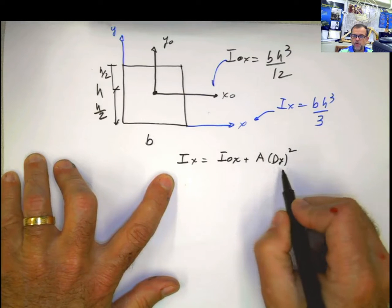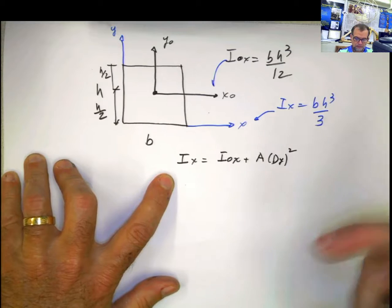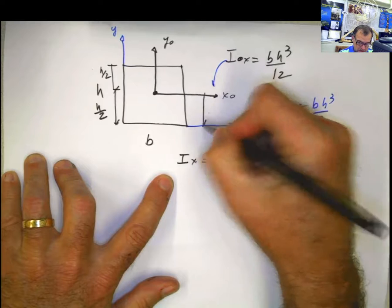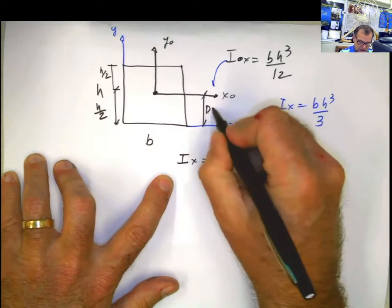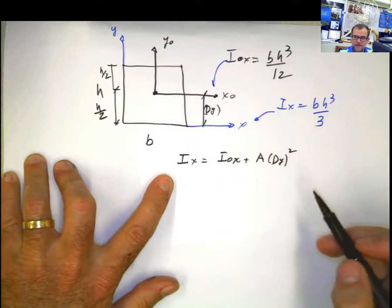However, that distance in y is a distance that separates both axes, the constant distance that separates both axes. In this case, that dy is represented by this. This is going to be that distance in y, and that distance in y is h divided by 2.